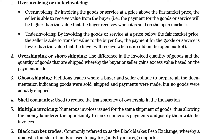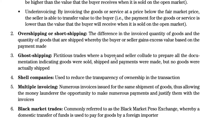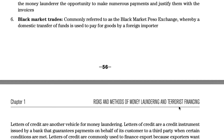Over-shipping or short-shipping involves a difference between the invoiced quantity and the actual quantity shipped, whereby the buyer or seller gains excess value. Ghost shipping refers to fictitious trades where a buyer and seller collude to prepare documentation indicating goods were sold, shipped, and paid for, but no goods were actually shipped. Shell companies are used to reduce transparency of ownership. Multiple invoicing involves numerous invoices issued for the same shipment, allowing multiple payments to be justified. Black market trades, commonly referred to as the black market peso exchange, involve domestic transfer of funds to pay for goods by a foreign importer.